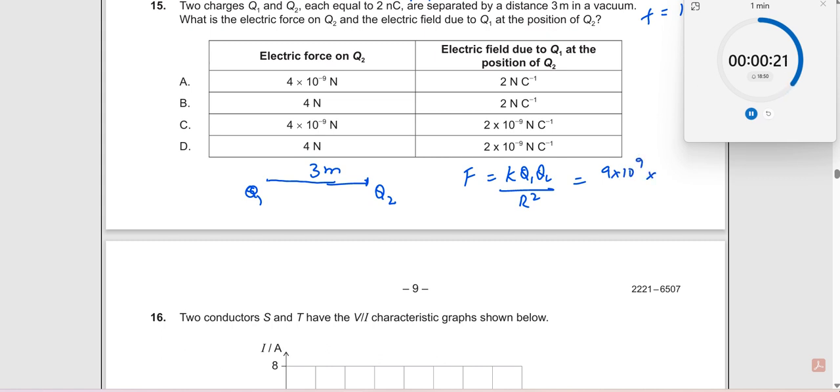q1 and q2 are equal, should be 4 × 10^-18, divided by r squared which is 9. So this goes away, so you get this as 4 × 10^-9 newton. So either of these two are correct. These two are incorrect. Then I need to know what is the electric field.